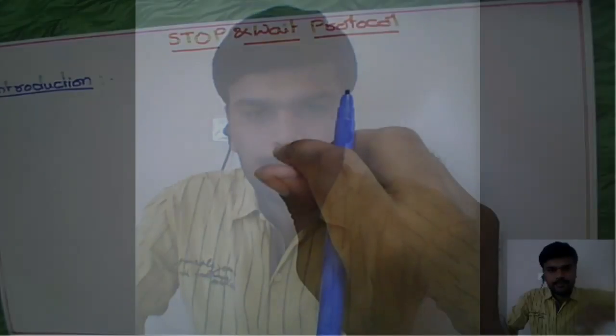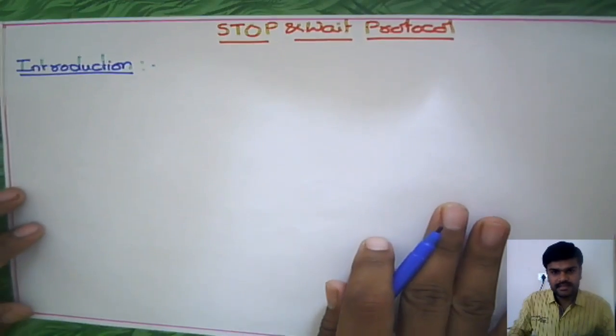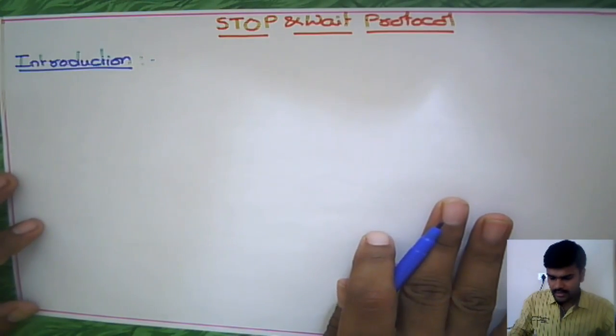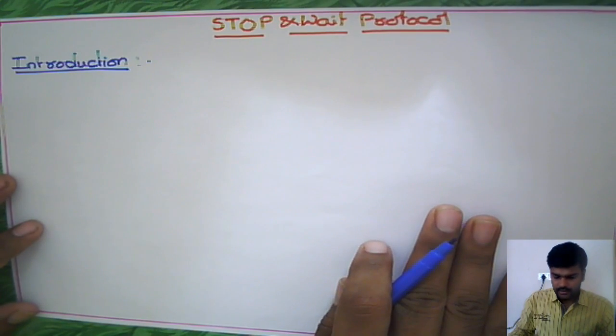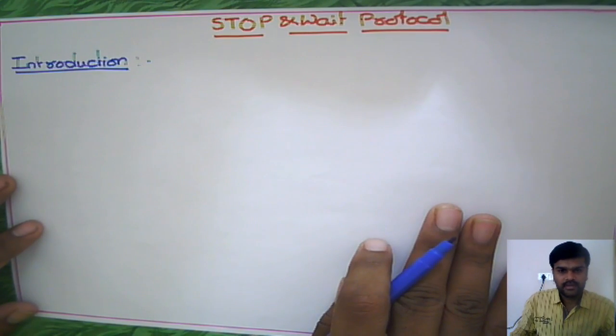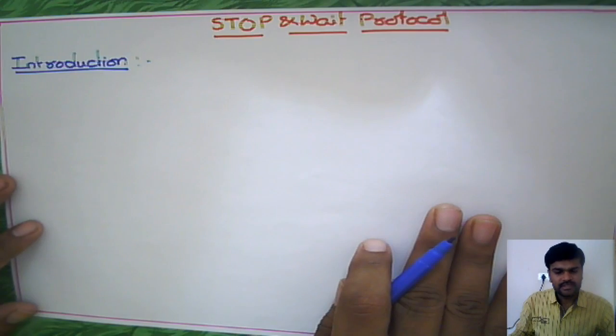In this sliding window protocol, the next topic is Stop and Wait. This is the first protocol in this series. Let us see in the first lecture the Stop and Wait introduction part — what the Stop and Wait protocol actually is and how it is going to be implemented.